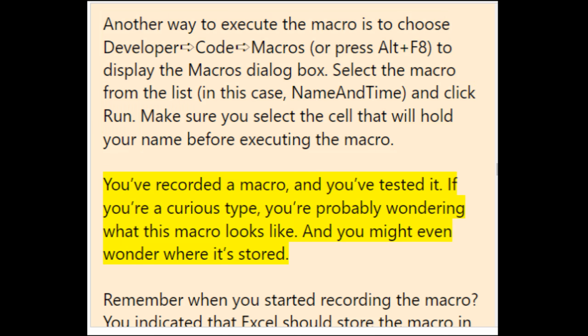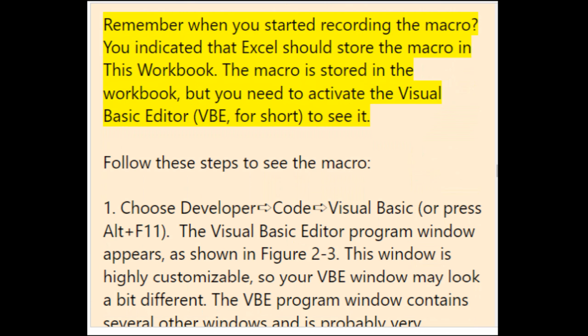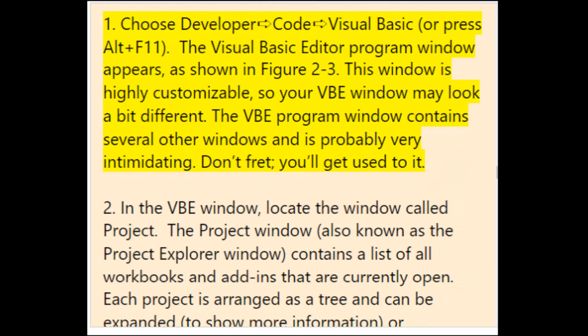You've recorded and tested the macro. To see what it looks like, activate the Visual Basic Editor by choosing Developer > Code > Visual Basic or pressing Alt+F11. The VBE program window appears — it is highly customizable so your VBE window may look a bit different. The macro is stored in this workbook. In the VBE's Project window, locate the project corresponding to the workbook in which you recorded the macro.